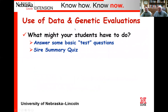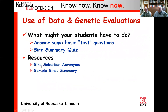Regarding the use of data and genetic evaluations, we want your students to be able to answer some basic test questions and complete the sire summary quiz. Answer which bull you would select if you wanted to do the following, using those sire selection acronyms and sample sire summaries. All bulls will have the same acronyms and the same information in the summary — those two examples we've given you are just samples.